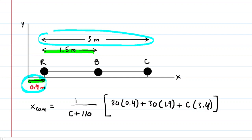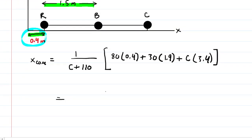Now we're going to simplify inside the bracket here again. When we multiply these together and these together and then add them, we should get 89. So we have 89 plus 3.4c, and that's going to be over that c plus 110. So this is the x-coordinate of the center of mass.